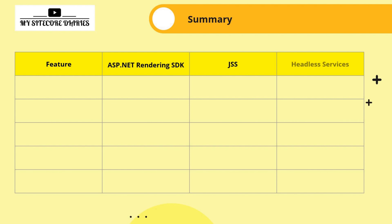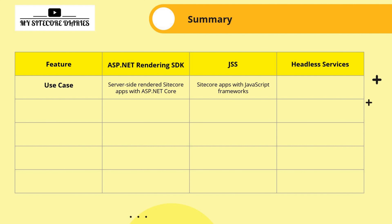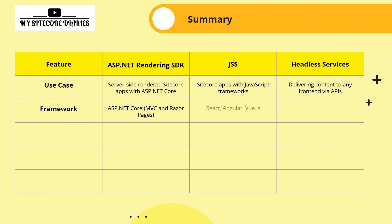Now let's compare these three SDKs. For use case: use the ASP.NET Rendering SDK for server-side rendered Sitecore apps with ASP.NET Core; use JSS for Sitecore apps with a JavaScript framework; use Headless Services when you need a 100% headless application or headless CMS delivering content to any front-end. For framework support: ASP.NET Rendering SDK uses ASP.NET Core with MVC and Razor Pages; JSS supports React, Angular, Vue, and Next.js; Headless Services supports any front-end technology with no limitation.